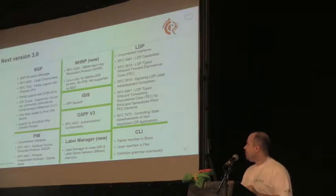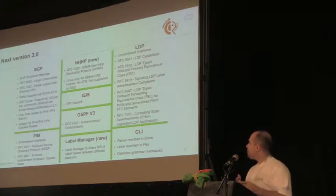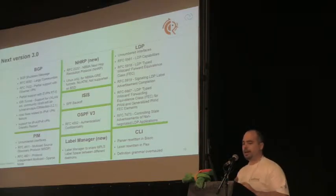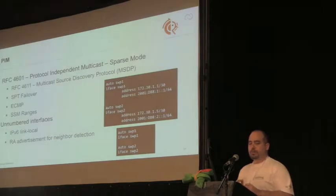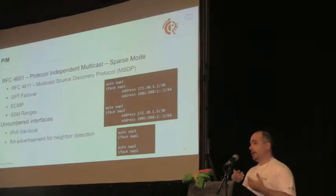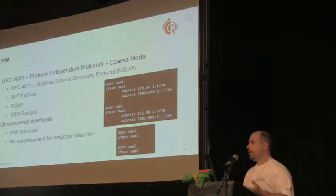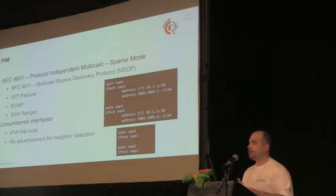In 3.0, PIM support was added and ISIS was almost completely rewritten — I have a separate slide about that. PIM is completely included in Free Range Routing and integrates with Zebra as well. MSTP wasn't available yet, so that was written as well, because that's one of the requirements in a multi-cost environment.